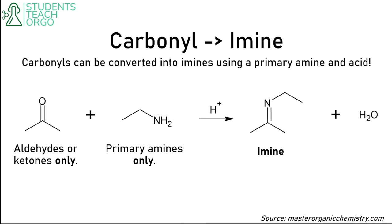We can convert carbonyls — basically double-bonded oxygens — into imines using a primary amine and acid. The carbonyls we can use are aldehydes or ketones exclusively. We can only use a primary amine, which is a nitrogen attached to one carbon. A secondary would be two carbons, a tertiary would be three. Acid just speeds up the reaction; it's not necessary, but it makes it occur faster, and we form this double-bonded structure known as an imine.